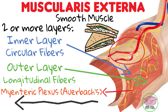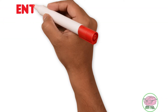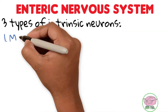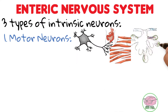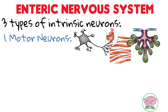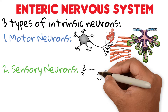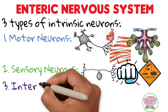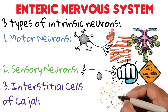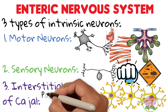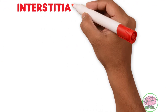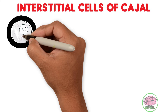Together with Meissner's plexus, they form the enteric nervous system. The enteric nervous system has three different types of functional neurons: motor neurons in charge of contracting smooth muscle and glands, sensitive neurons that pick up mechanical or chemical stimuli from the mucosa, and interstitial cells of Cajal, which are interneurons that act as pacemaker cells and communicate between neurons. These interesting cells are still subjects of investigation.